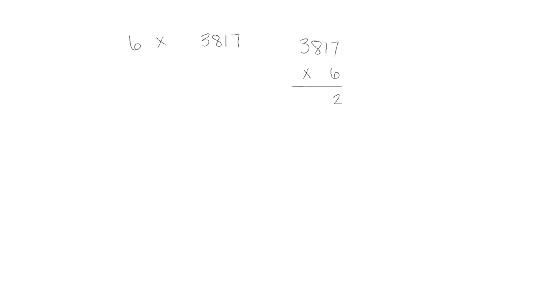Let's look at another one: six times 3,817. We'll write it vertically. Starting with the ones, seven ones six times would be forty-two. So we'll leave the two here and put the four tens in the tens column. One ten six times would be six tens, plus four would be ten tens, which is a hundred. Eight hundreds six times would be forty-eight hundreds, plus one more would be forty-nine hundreds. So we'll leave the nine hundreds here and put the four thousands in the thousands column. Three thousands six times would be eighteen thousands, plus four more would be twenty-two thousand. So that would be our total product.